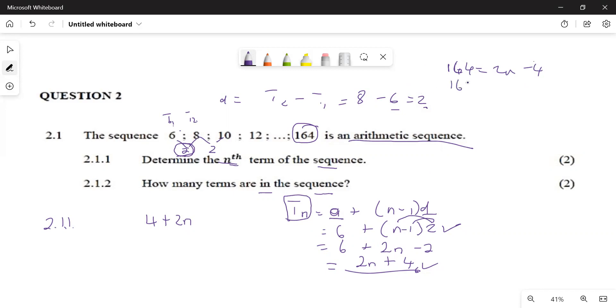You take this one to the other side. We are going to have 164 plus 4. If you take it to the other side, we are going to have 160, which is going to be equal to 2n. We should divide by 2. It says n is going to be equal to 80, meaning there are 80 terms here.